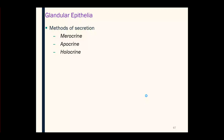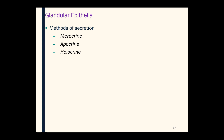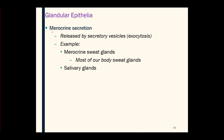The first is merocrine — you may also see it written as eccrine. Then we have apocrine, and then we'll finish up with holocrine. With merocrine secretion, the gland releases its product by secretory vesicles through a process known as exocytosis.